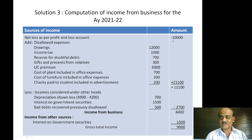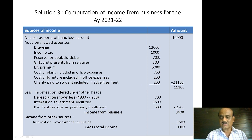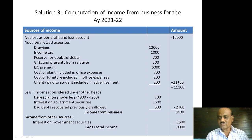The net loss is a minus figure: minus Rs.10,000. To compute income from business we add back disallowable items. Drawings is disallowable, income tax is disallowable, reserve for bad debts is disallowable, gifts and presents are disallowable, LIC premium is disallowable, cost of plant is disallowable, cost of furniture is disallowable, charity is disallowable. The total of disallowables comes to plus Rs.21,100.